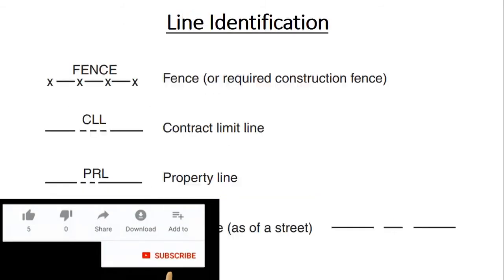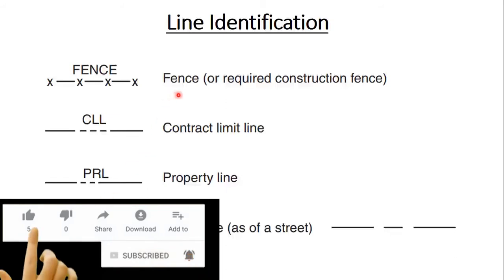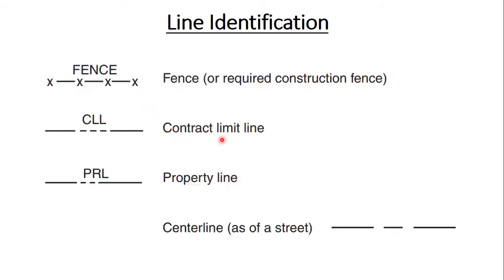Next we have line identifications. For fencing requirements, there is a specific symbol. The contract limit line defines the site area where the project will be executed. The property line divides your project area from another property. The centerline is used for the center of a street.